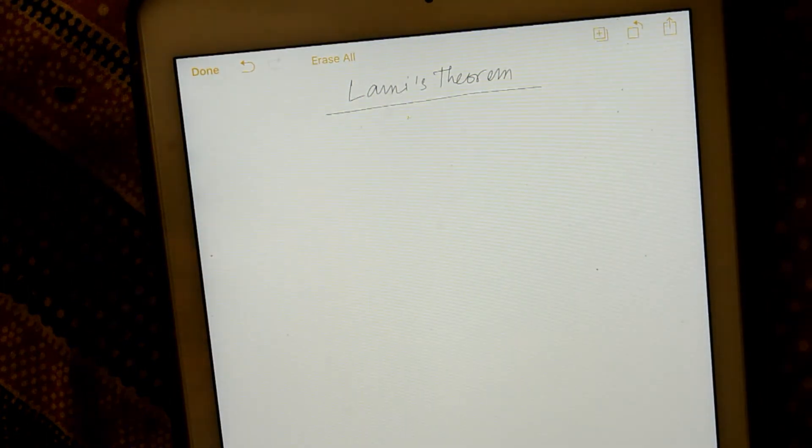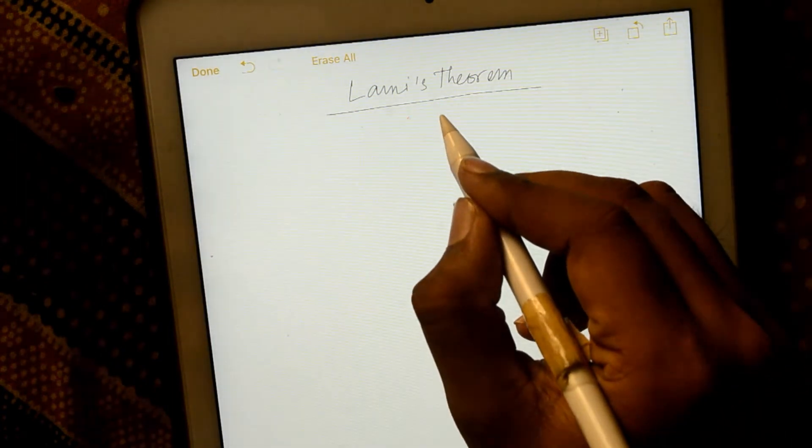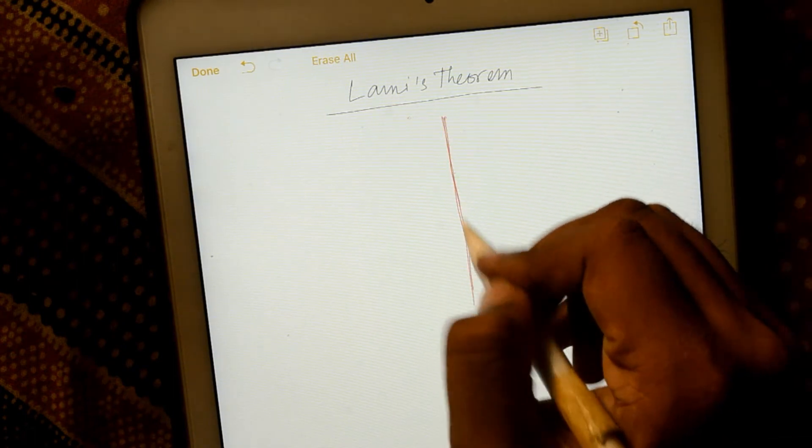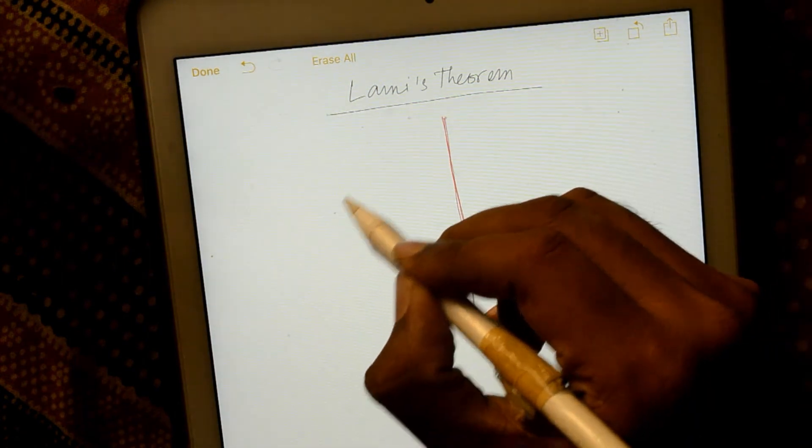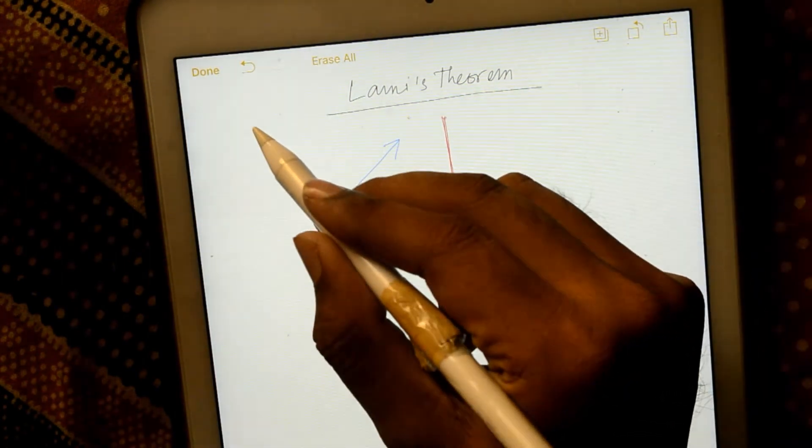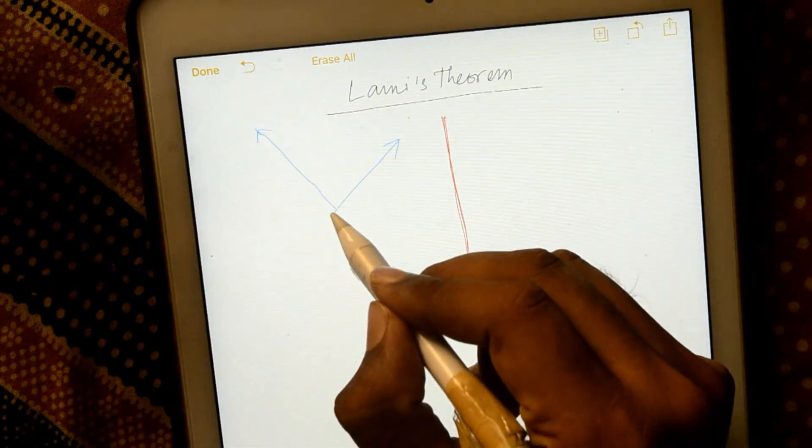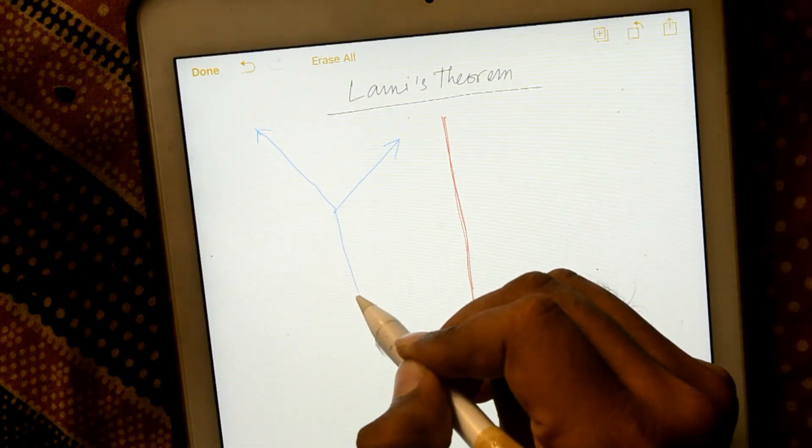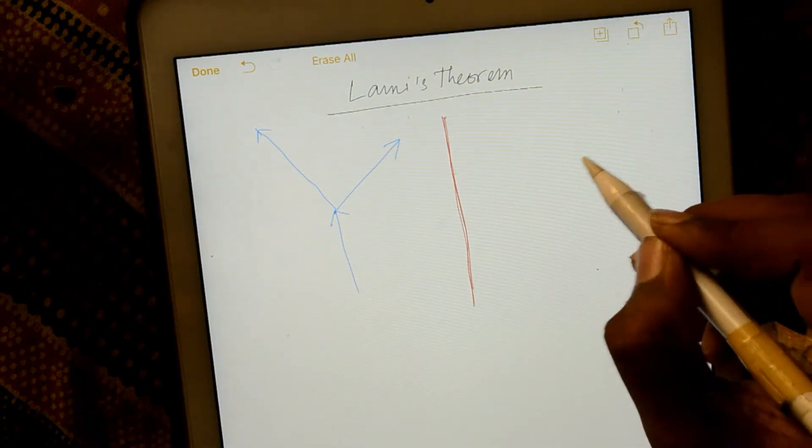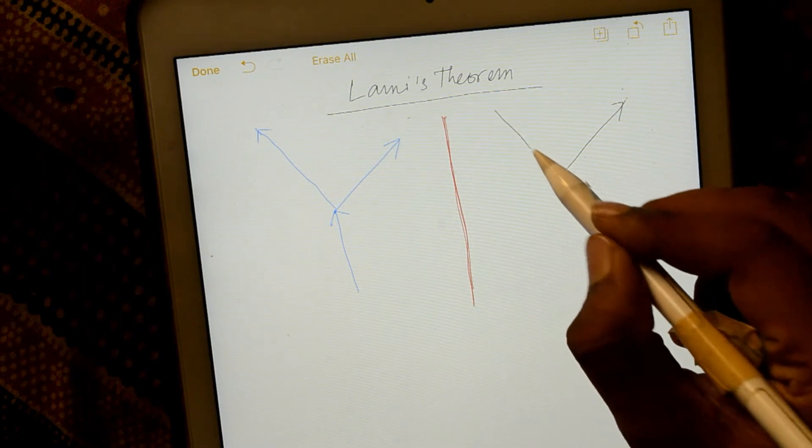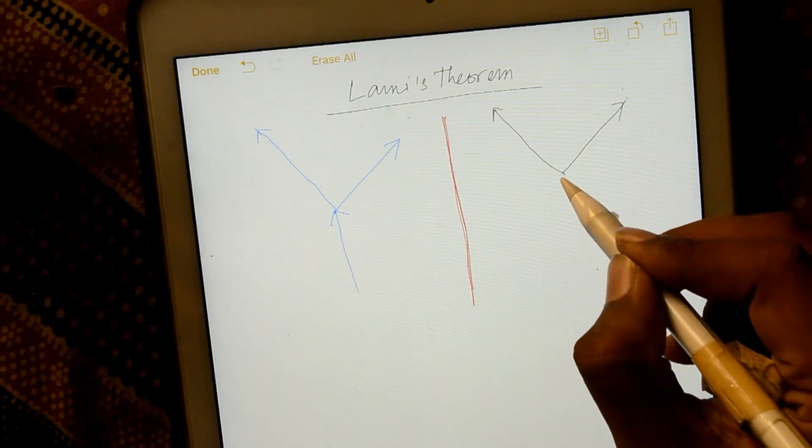Now let me ask which diagram is okay. I am drawing two diagrams. One is this, this and this, and one is this, this, this, this.